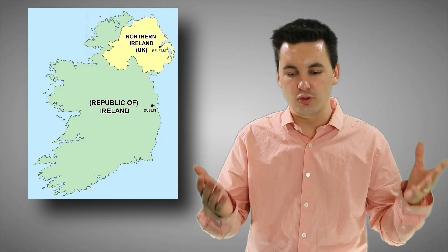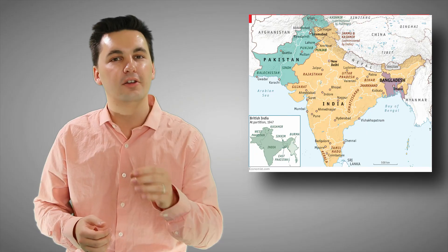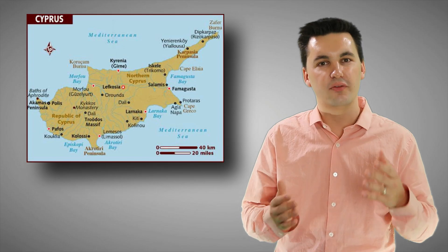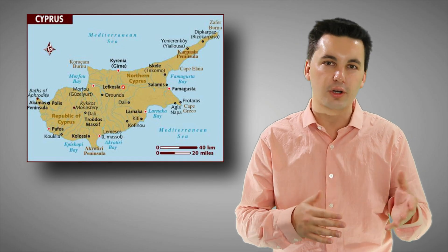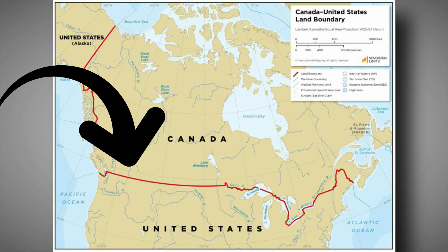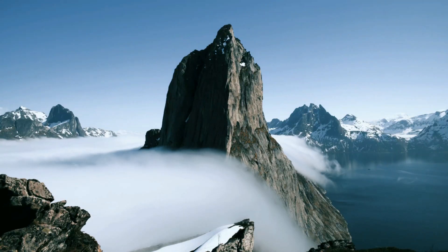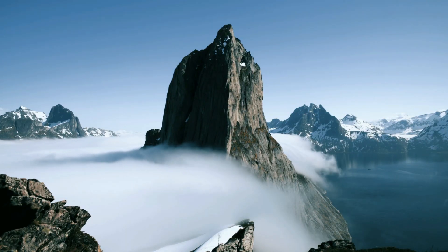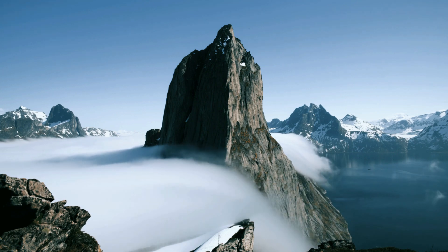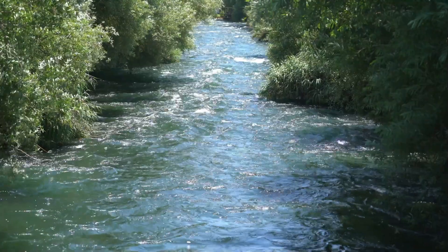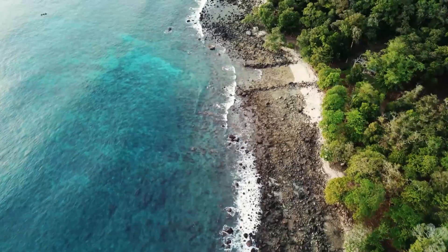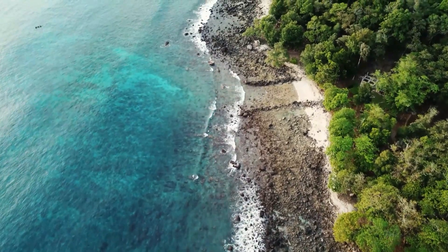A cultural boundary is a boundary that divides different ethnicities, nations, religions, languages, and just different cultural groups in general. Examples include Northern Ireland and Ireland, India and Pakistan, or even Cyprus, which is divided into a Greek area and a Turkish area. A geometric boundary uses straight lines that go along parallels of latitude — for example, the border between the United States and Canada, or Chad and Libya. A physical boundary follows the natural landscape or major physical features like deserts, mountains, rivers, large lakes, or even oceans.